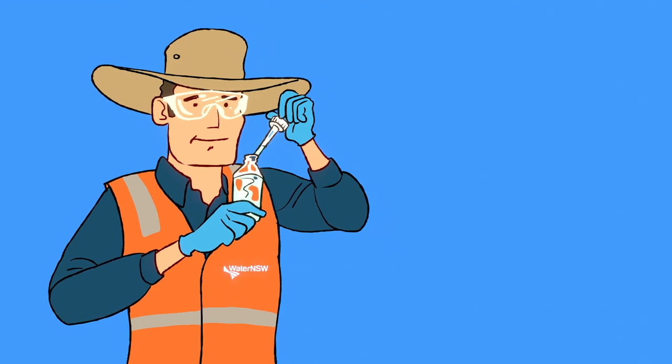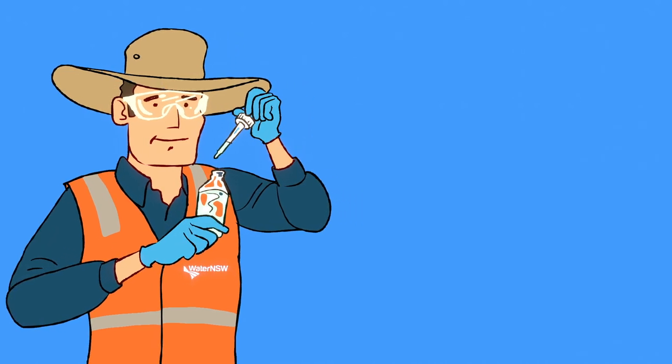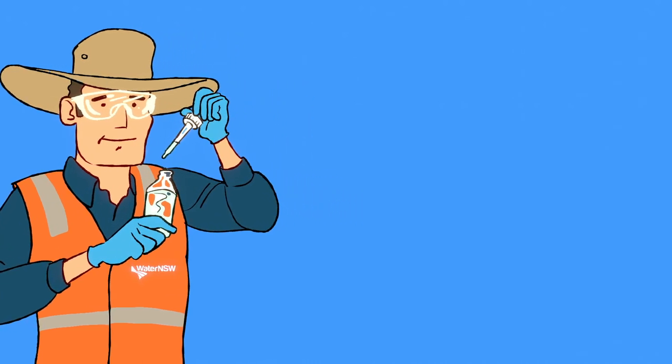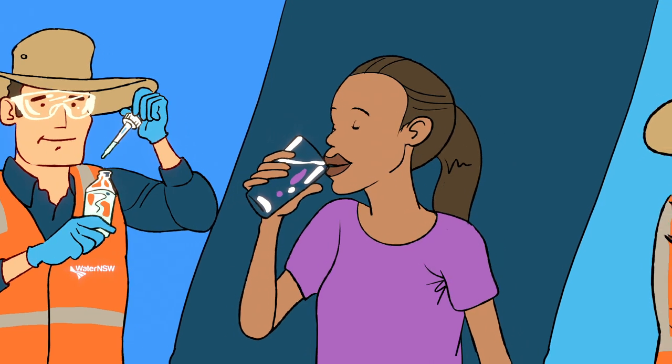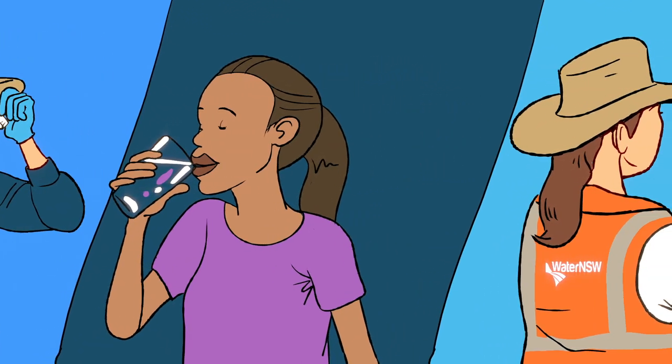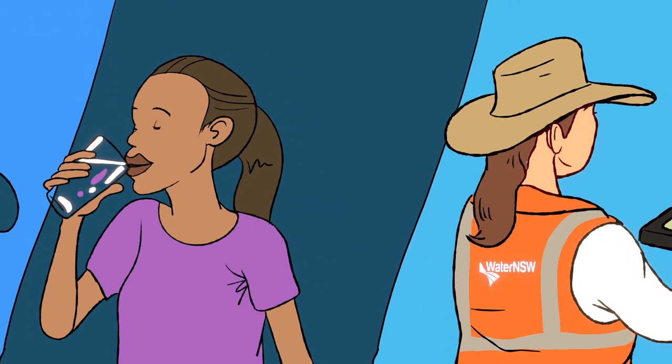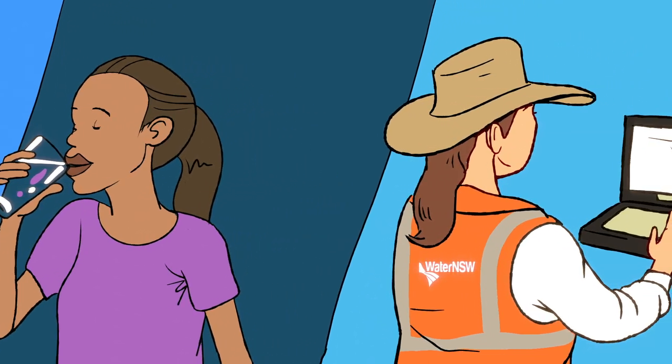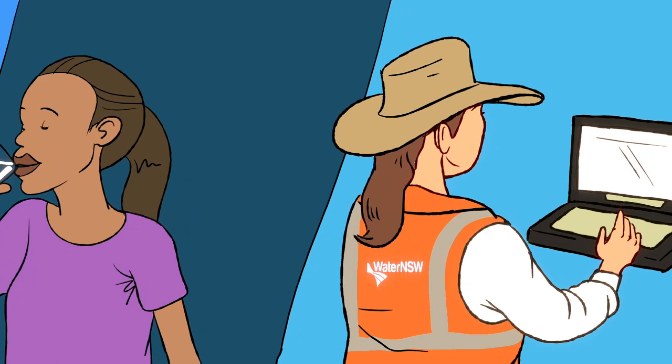Water NSW closely monitors the different layers so we can supply the best quality raw water to our customers. After all, this raw water will eventually become drinking water. We monitor what is going on in each layer so that we can predict water quality challenges, track inflows from rain events and move the outlet screens to ensure the supply stays safe, stable and of the highest quality available.